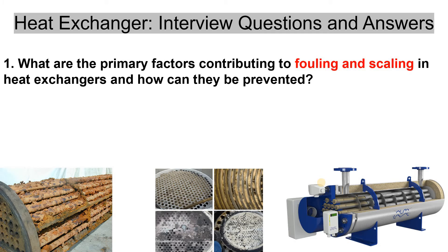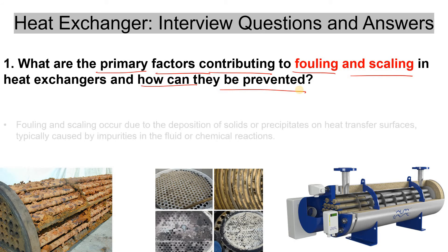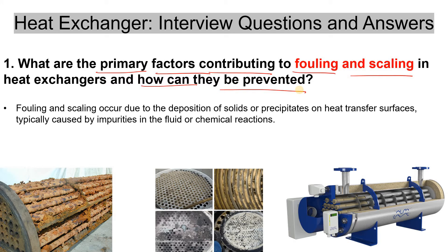The first question is: what are the primary factors which contribute to fouling and scaling in heat exchangers and how can they be prevented? If there is one heat exchanger and it is in operation, after some time you will see that the tube bundle gets some deposition — some deposition of the impurities which are present in the fluid or liquid.